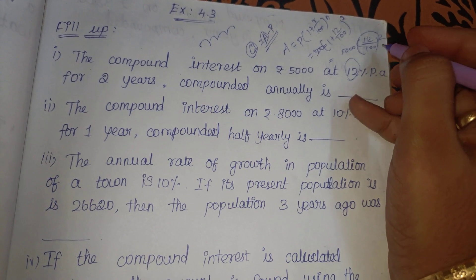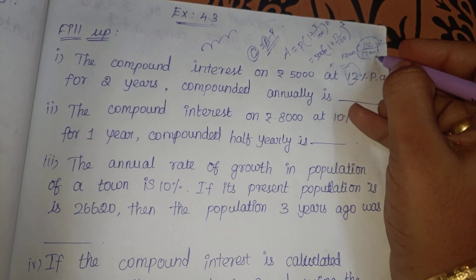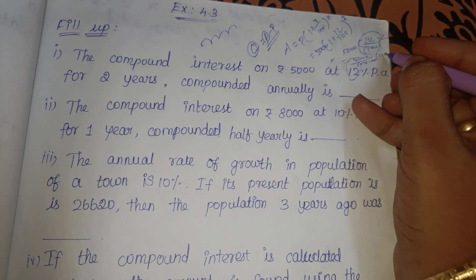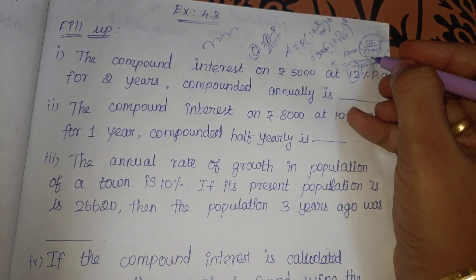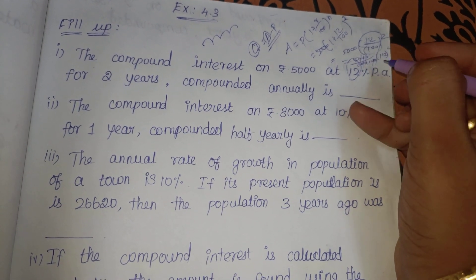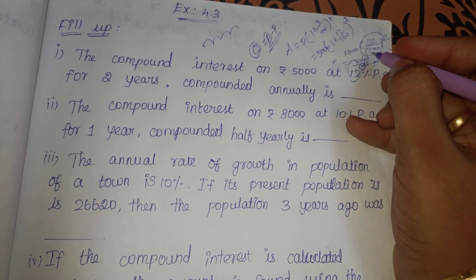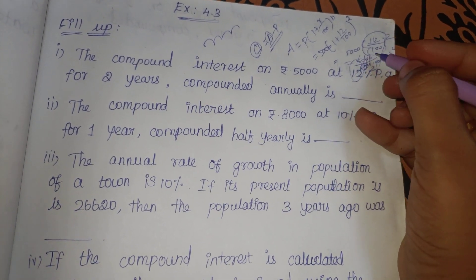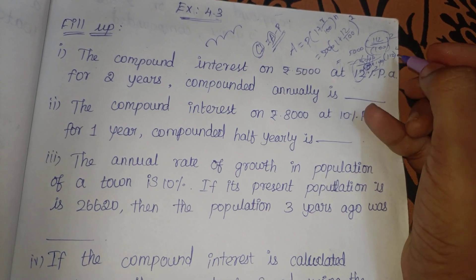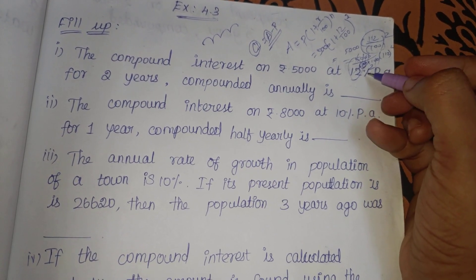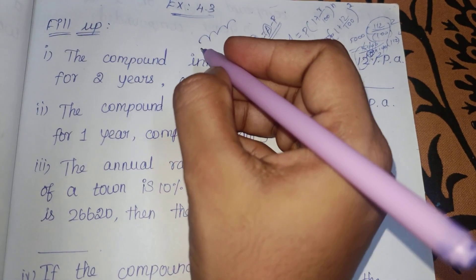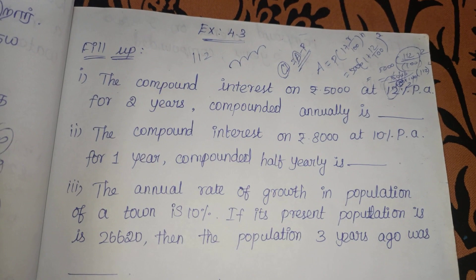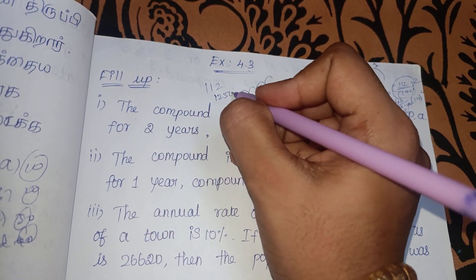So now we just compute 112 squared. Here we have 100 squared. Now 5,000 divided by 100 into 100, that is 112 squared. We can cancel two zeros and two zeros. So here we have 10, and here we have 5. 112 squared is 12,544.